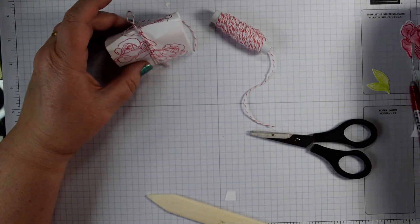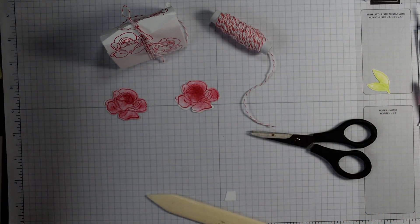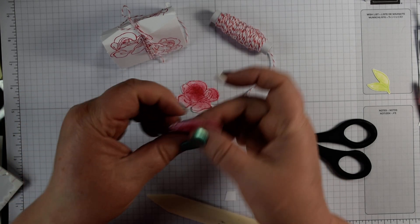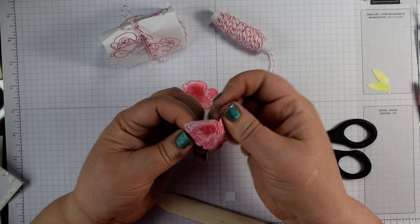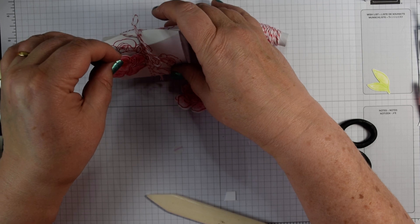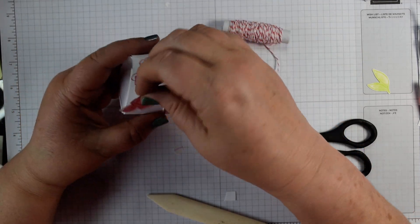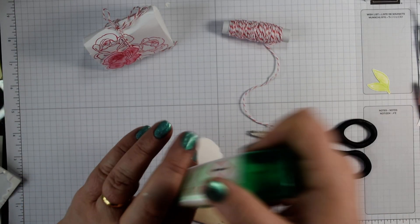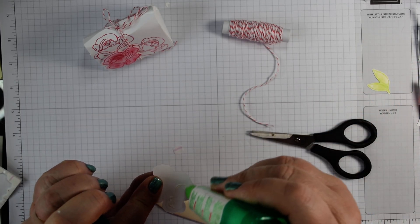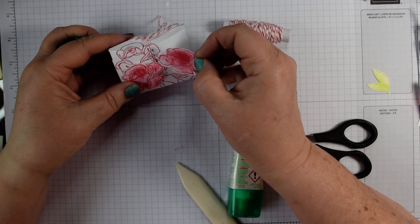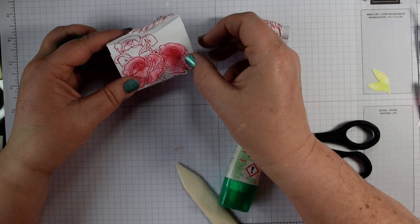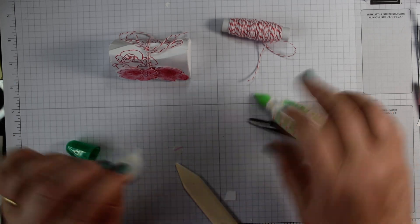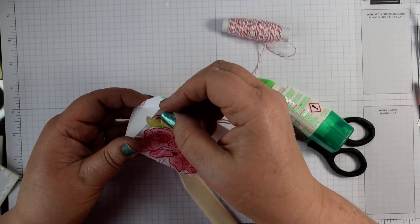Then we can just pop our decorations on with dimensionals. I'm going to pop a dimensional on the back of my first rose and I'm just literally bending that with my fingers, and pop that over the top there. With this one, I'm just going to add a little bit of Tombow to the back, just flat, and just pop that behind so you see a little bit of that stamping. I just think it's nice to have a little bit behind, then a bit of greenery.